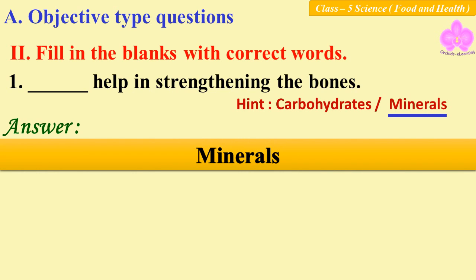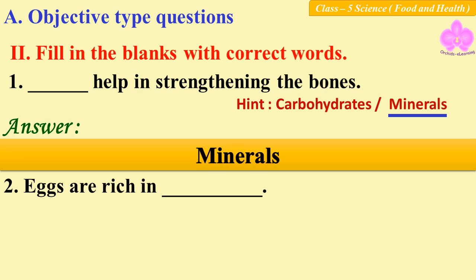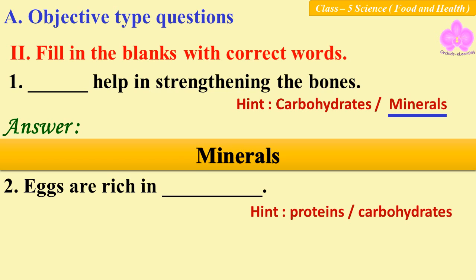Question number two: eggs are rich in dash. Hint: proteins or carbohydrates. Answer: proteins.